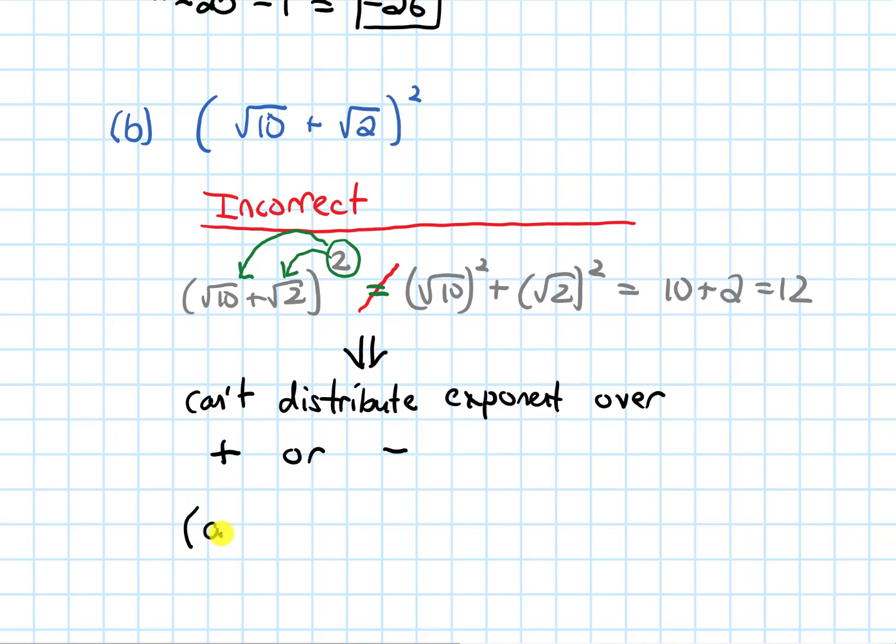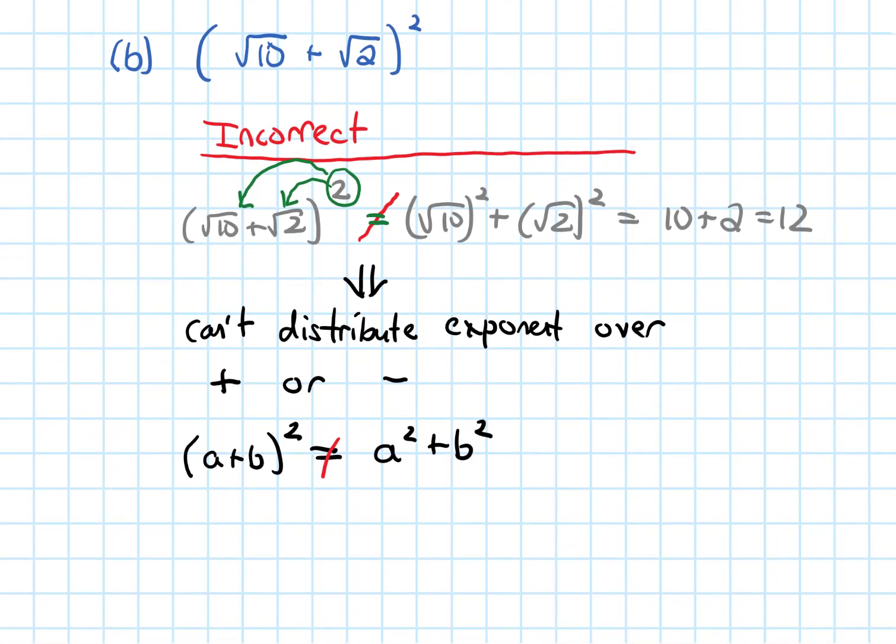More formally, if I have A plus B in parentheses squared, that is not just going to be equal to A squared plus B squared. I'm going to call this incorrect method the whee rule. Because it's super tempting to just go whee with that exponent and distribute it everywhere. But that doesn't work here when we're adding or subtracting two things. The way I actually work out something plus something squared is I need to foil.